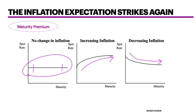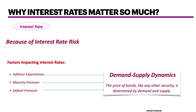At the end of the day, all these factors play a part in demand-supply dynamics. If I'm expecting inflation to go up, I'll sell bonds and push yields up. If someone wants to borrow from me for longer duration, I want to charge them extra interest rate. And lastly, let's now focus on the default premium.